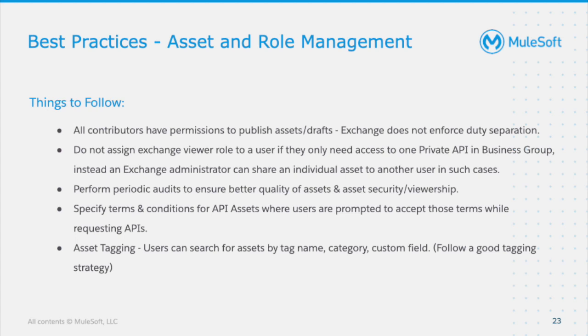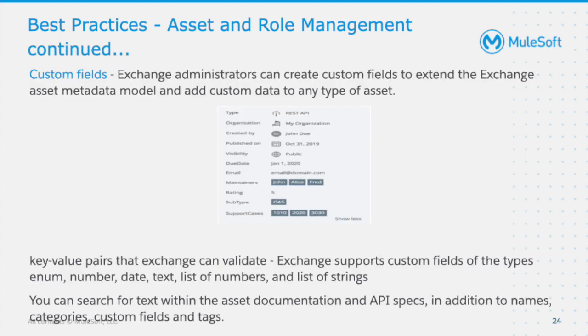Asset tagging is also very important. When you create an asset, you can place it in a particular category, tag it, or add tag names and custom fields. Custom fields allow you to add support cases or indicate what the asset does — for instance, whether it is for a specific system API, a particular business unit, or a connected system like Salesforce or AWS. A custom field is a key-value pair added to an asset version. These custom fields are searchable, making it easier for users to find assets — especially important given the large number of assets that exist and the challenge of endless scrolling.